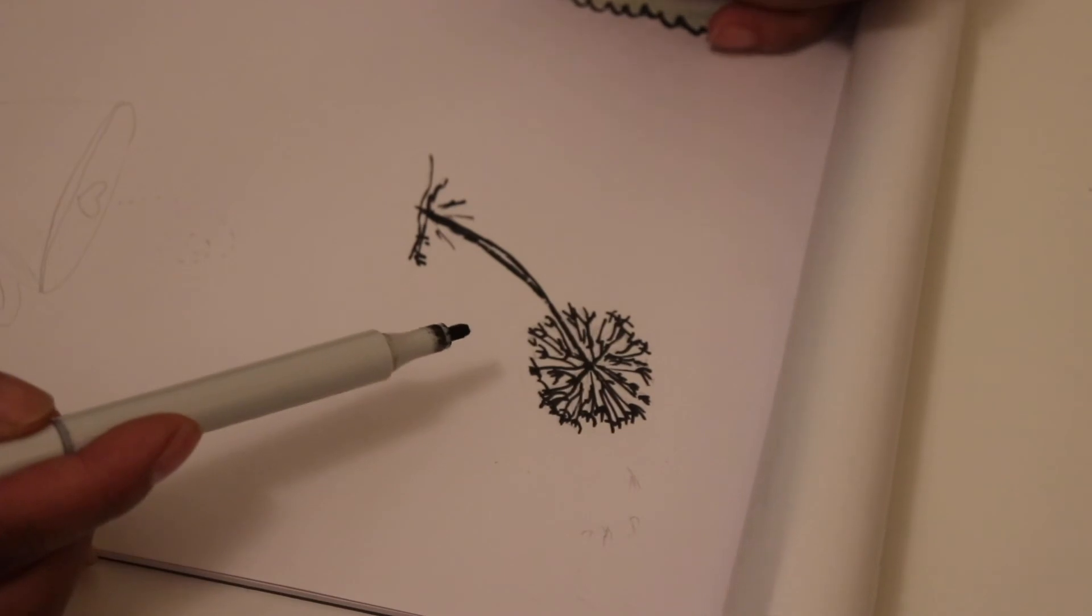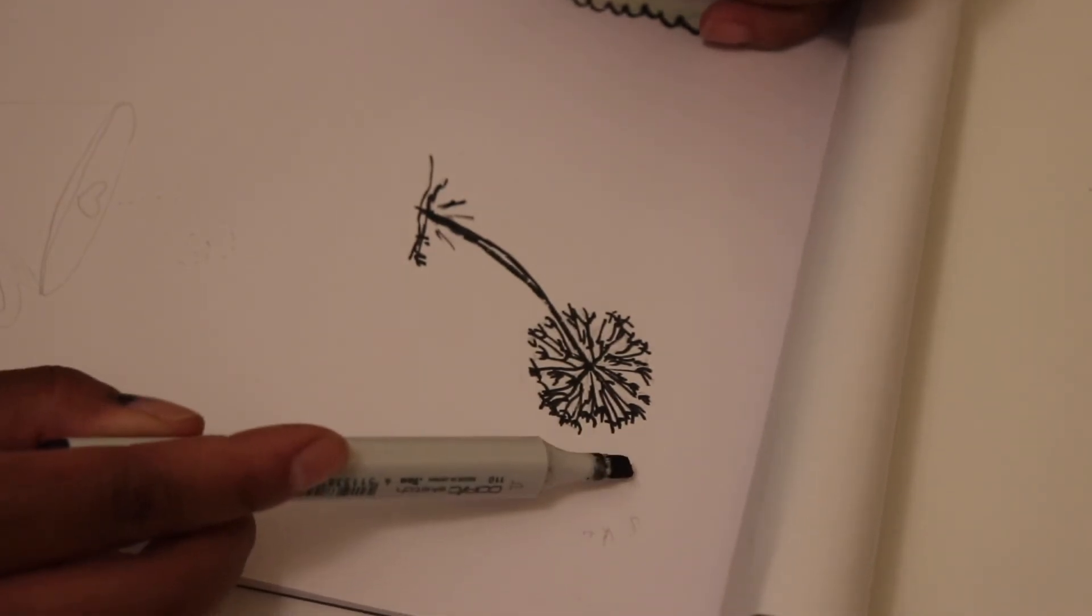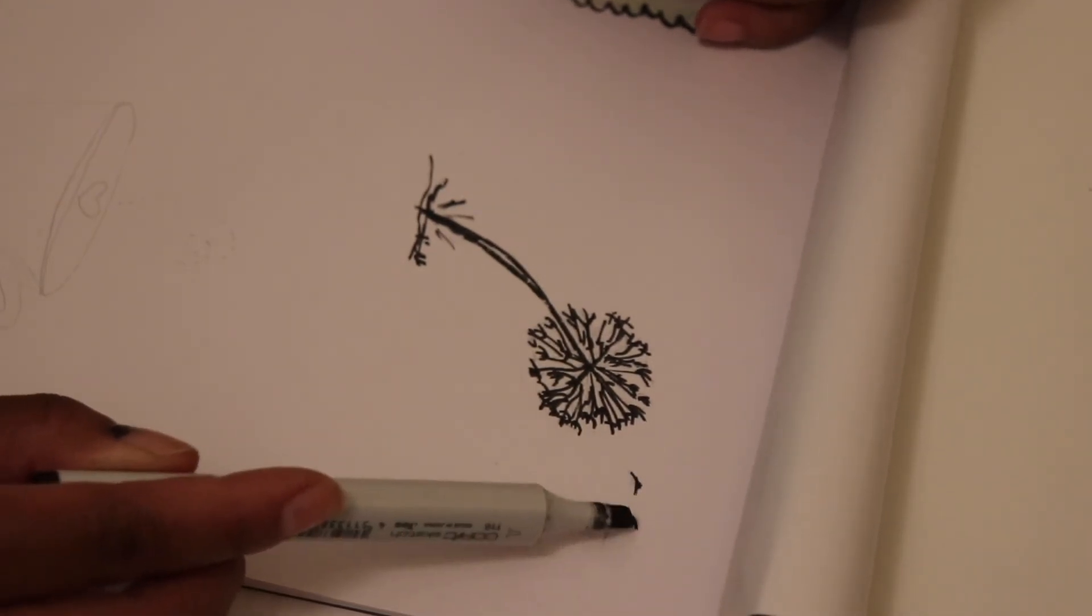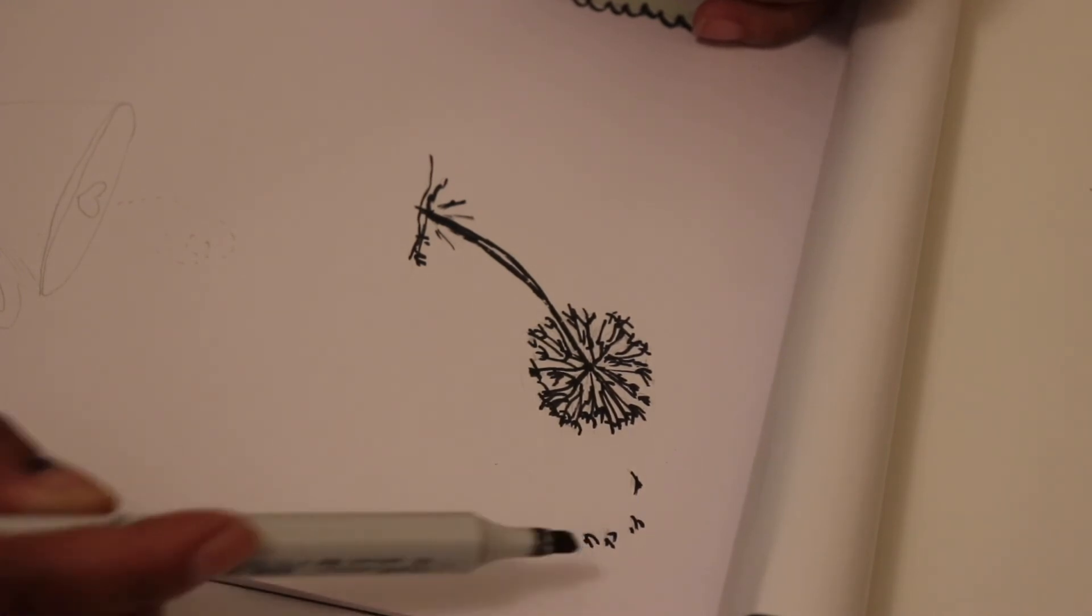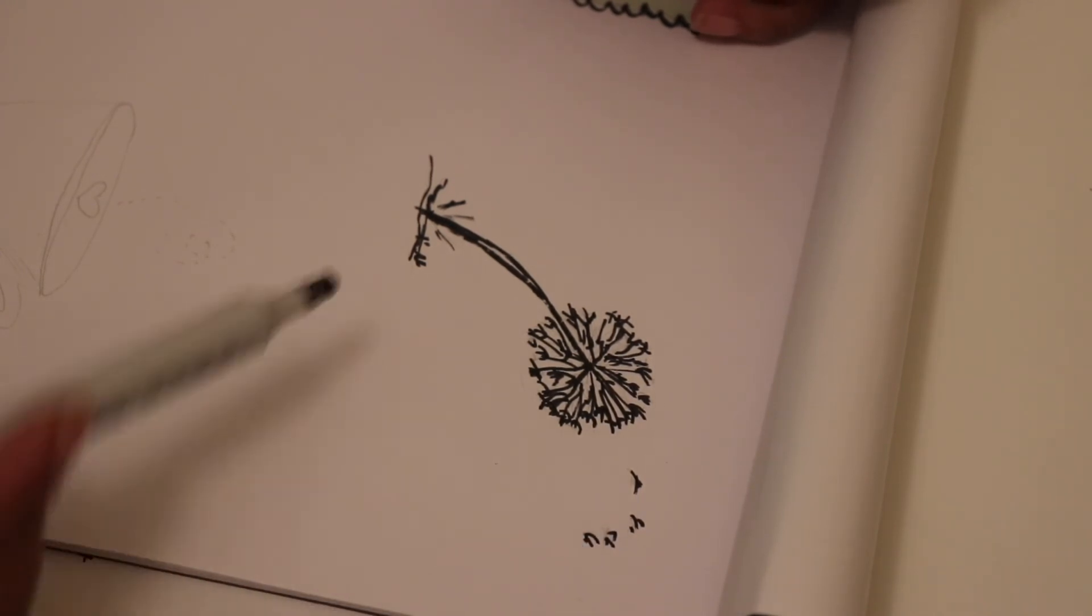And you can draw some accessories on a flower like it's blown in the wind. Just a couple lines like this. And there you have it. Your very own wish flower. And you always sign your work like that, guys.